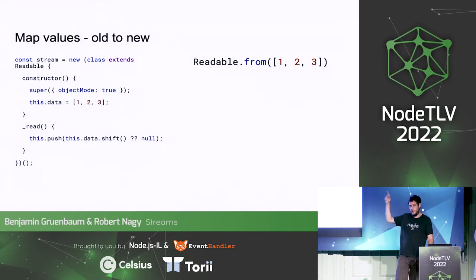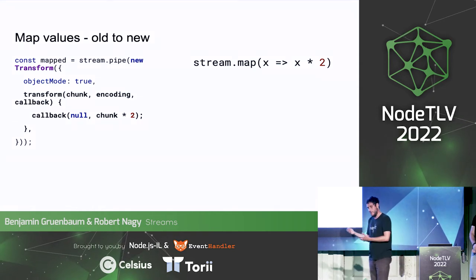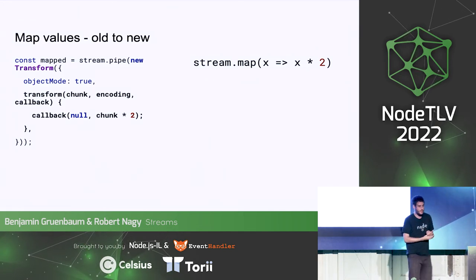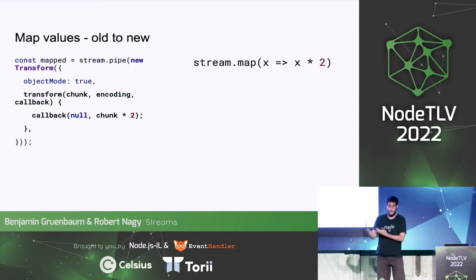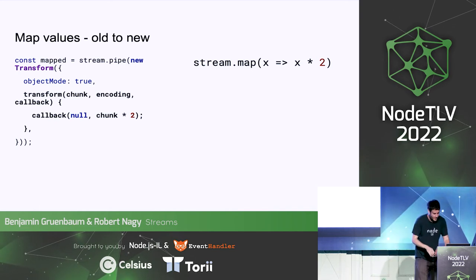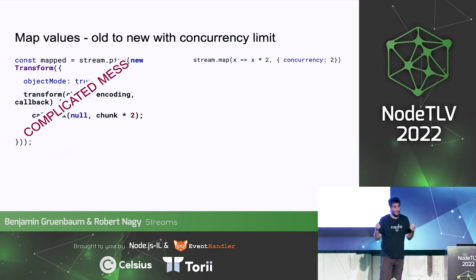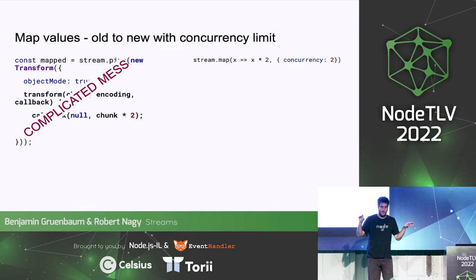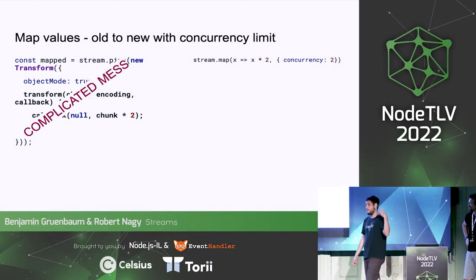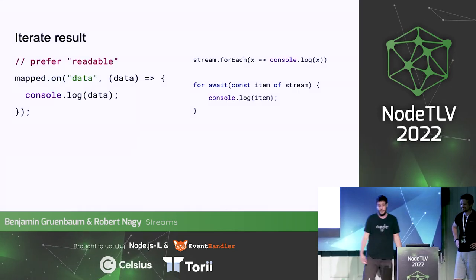When you want to map, you used to pipe a transform stream or pipeline it or compose it. Now you can just dot-map. If you have a stream of one type of object and want another, there's no need for complicated npm libraries — just dot-map it. For concurrency, if you have an API you can hit at most three times at once, you can handle that easily too — Robert will elaborate. Iterating is simple: you can for-await or use dot-forEach like you would for an array.